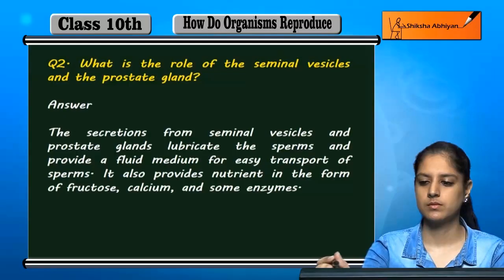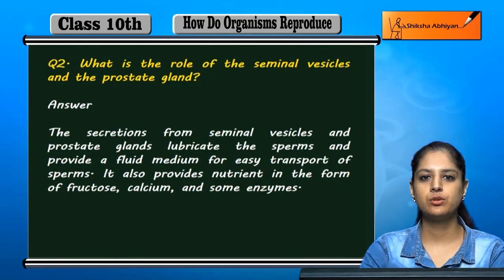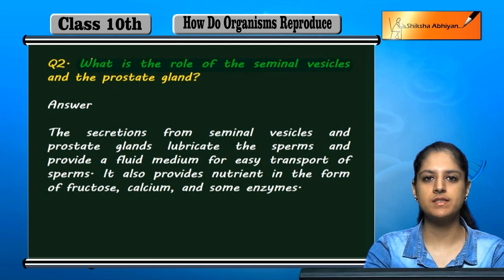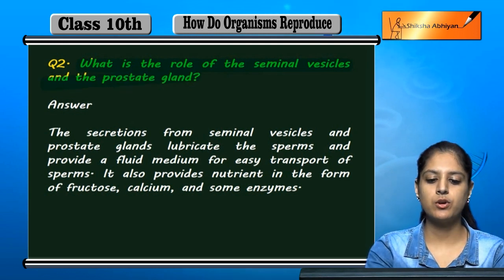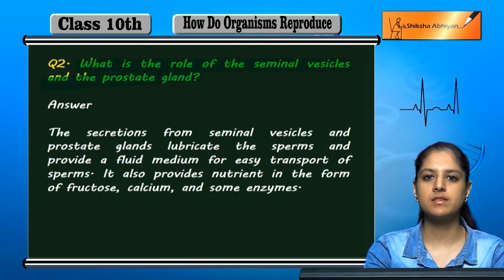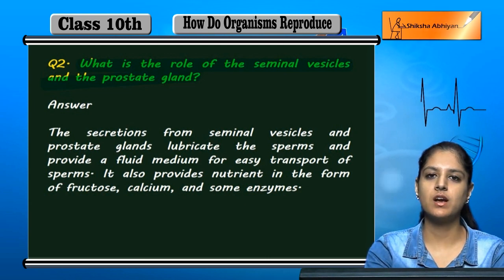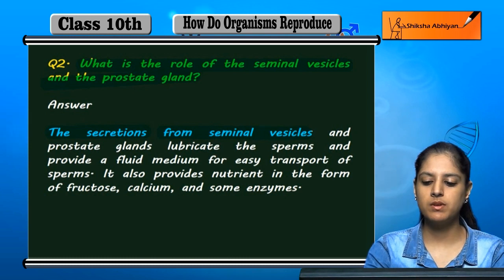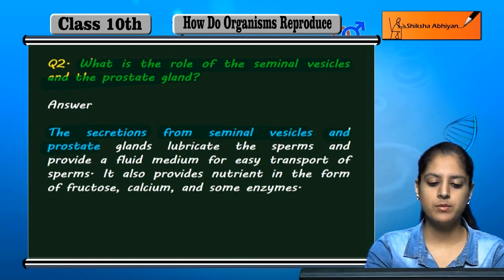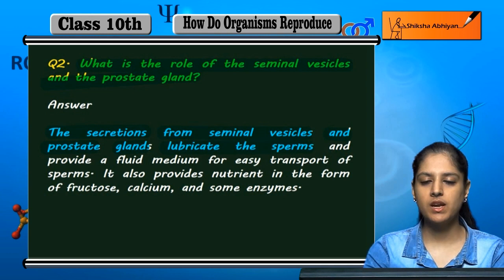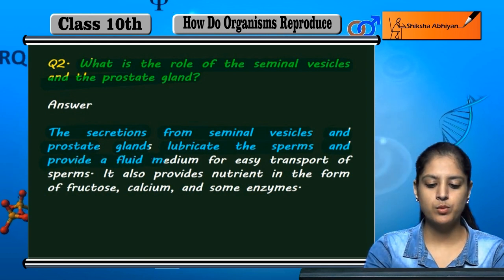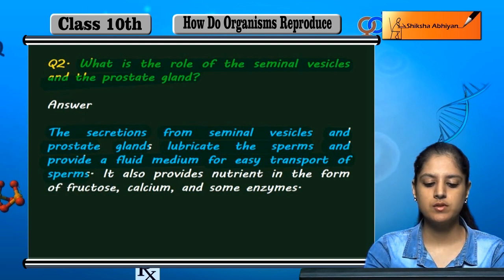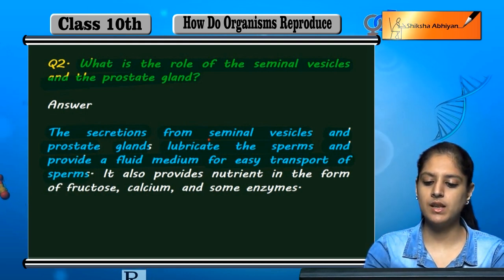Question: What is the role of seminal vesicles and the prostate glands? The secretions from seminal vesicles and prostate glands lubricate the sperms and provide a fluid medium for easy transport of sperm.